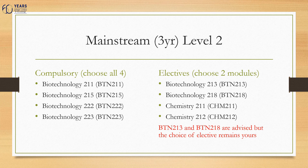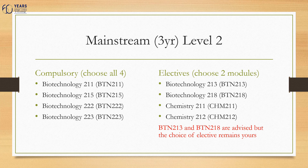At level two, you must register for six modules: four compulsory modules and two elective modules. Your compulsory modules are Biotechnology 211 in the first semester, Biotechnology 215 in the first semester, Biotechnology 222 in the first semester, and Biotechnology 223 in the second semester. Your electives that you can choose from are Biotechnology 213 in the second semester, and Chemistry 212 in the second semester. PTN 213 and 218 are advised, but the choice of elective remains yours.